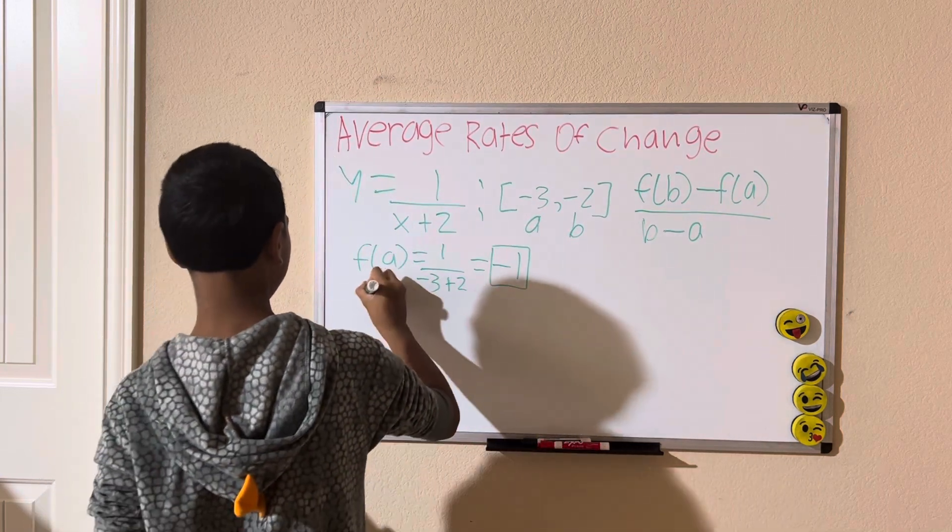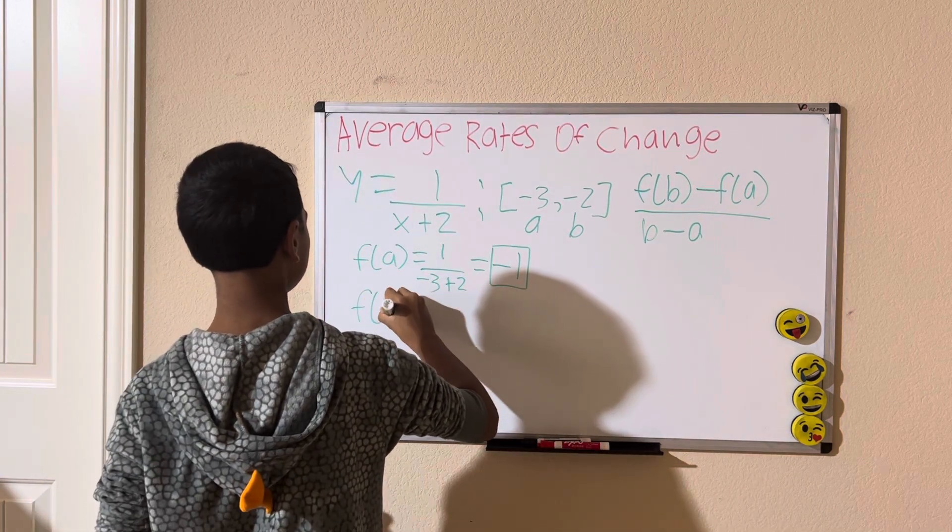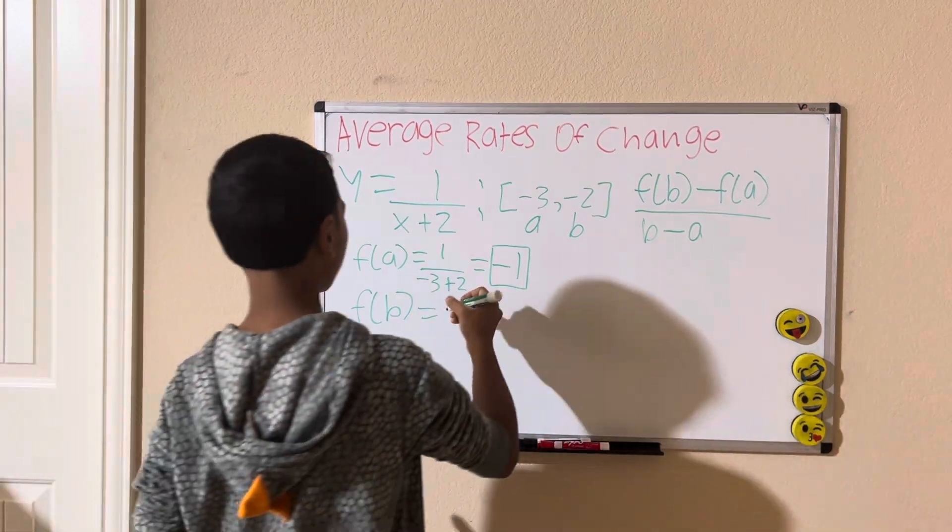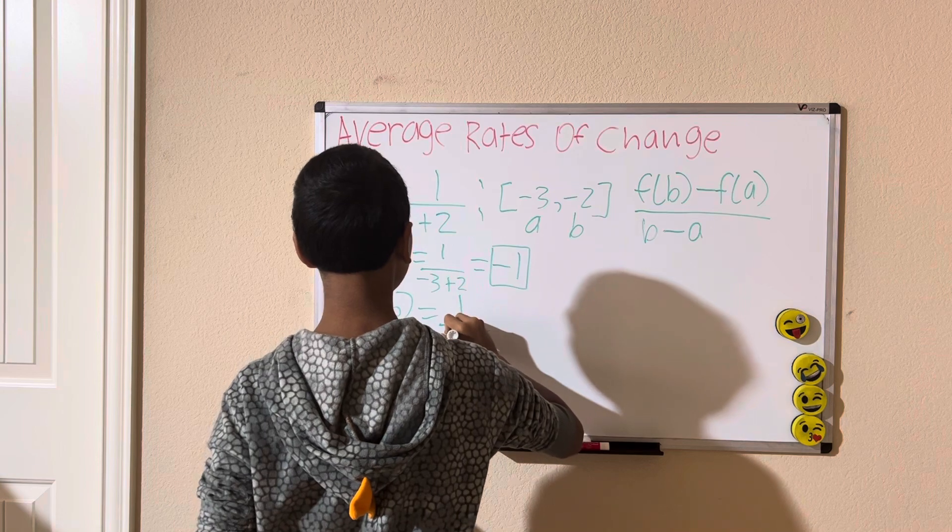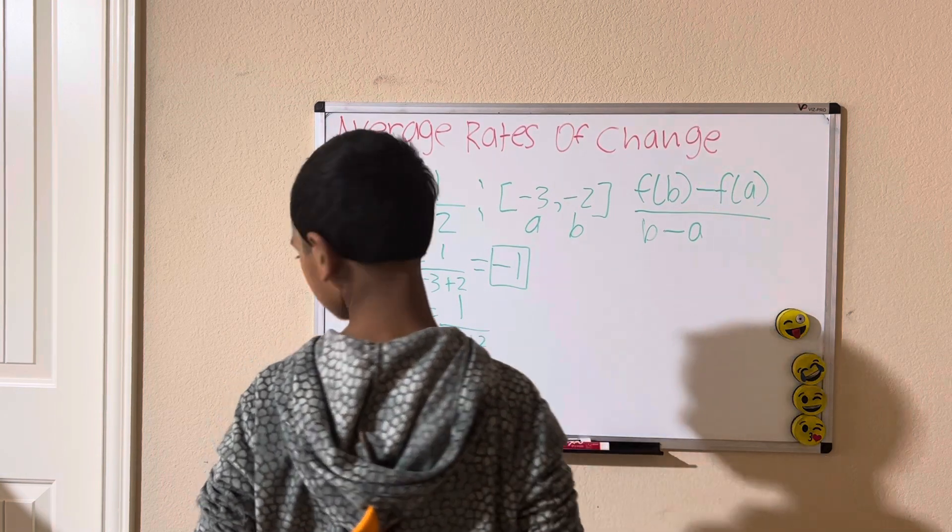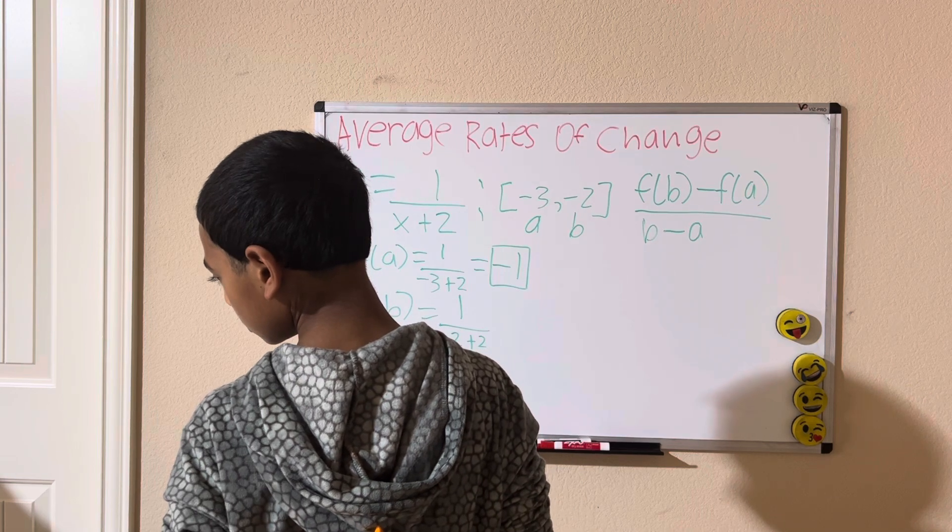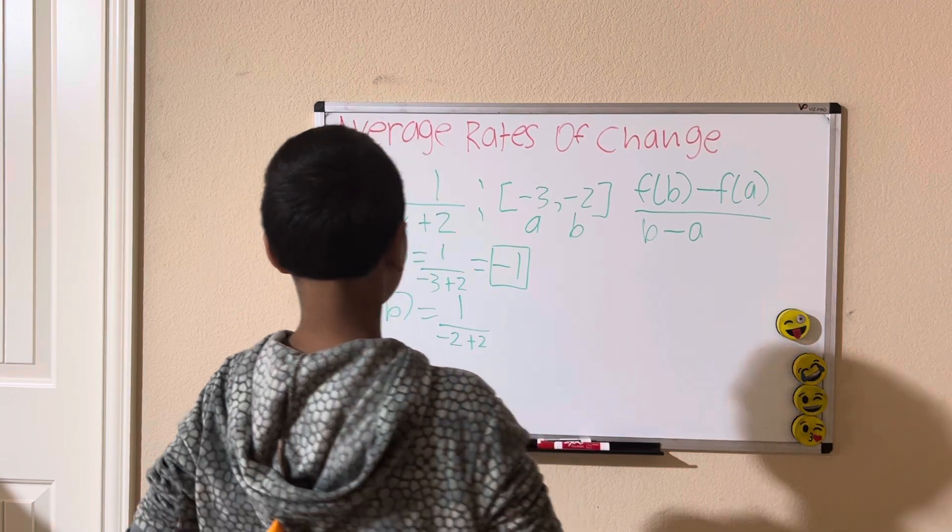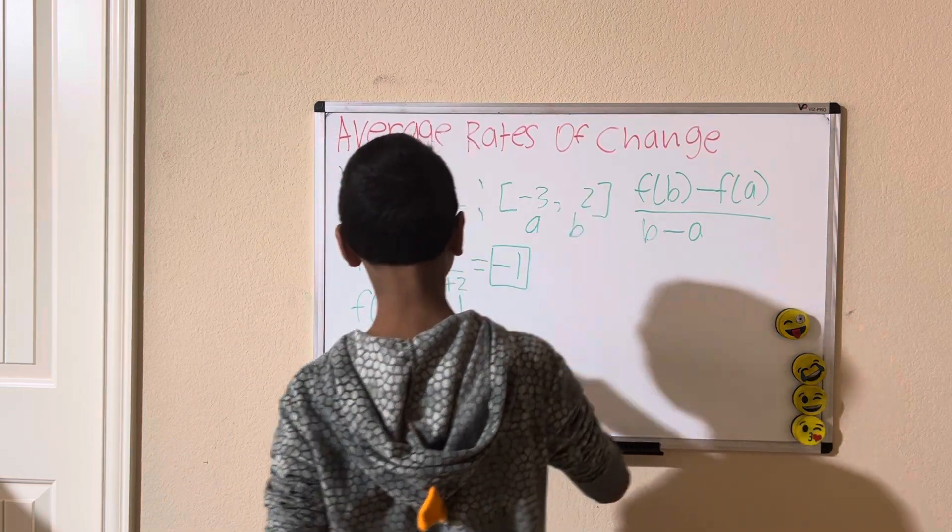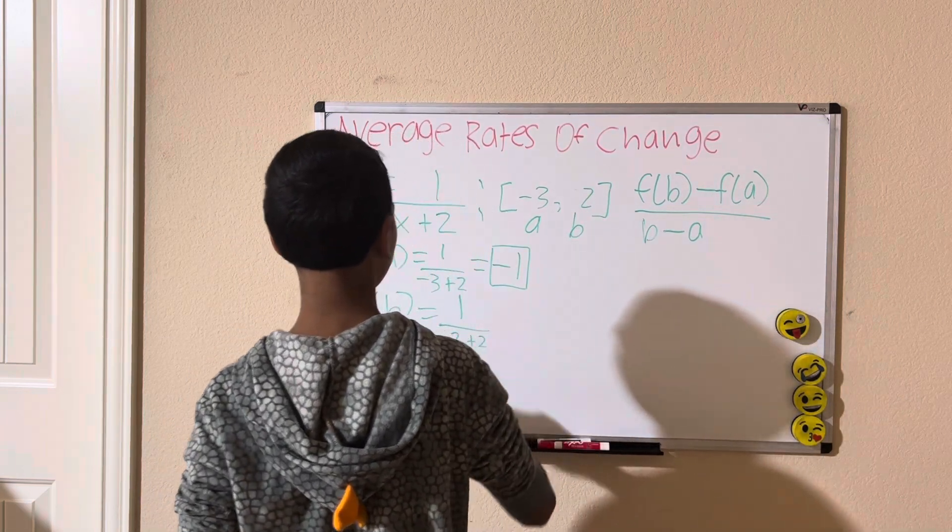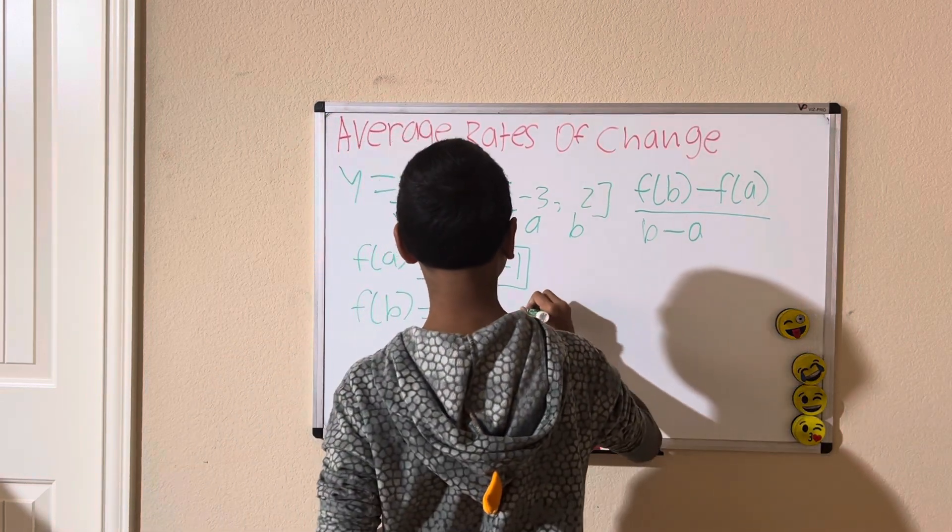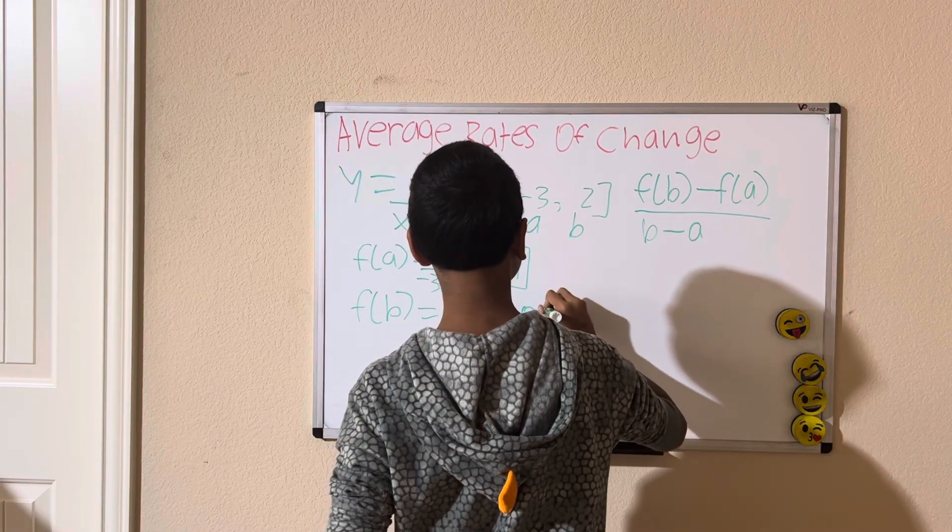Let's find f of b next. Equals 1 divided by negative 2 plus 2. Oh, you know what, let's say 2, because it's going to be undefined when we do that. So, 1 divided by 2 plus 2, which is equal to 0.25.